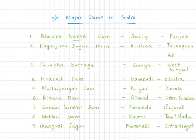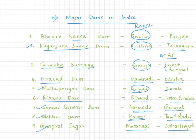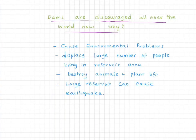These are all the major dams in India, and also must-know river dams. This chart is given in order: dam name, river name, and followed by the location. We know the advantages of dams — but every coin has two sides.